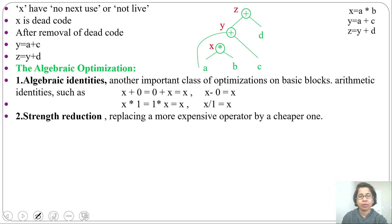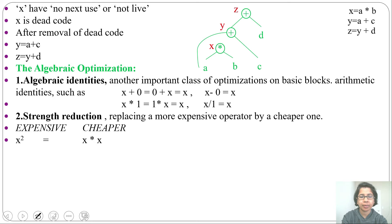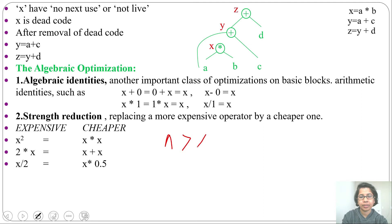Next is strength reduction. We can replace a more expensive operator with a cheaper one — that is called strength reduction. For example, x power 2 can be written as x multiplication x. 2 multiplication x can be written as x plus x. x divided by 2 can be written as x multiplication 0.5. Power is more expensive than multiplication; division is more expensive than multiplication; multiplication is more expensive than subtraction; subtraction is more expensive than addition. So a higher-cost operator can be replaced with a lower-cost one.